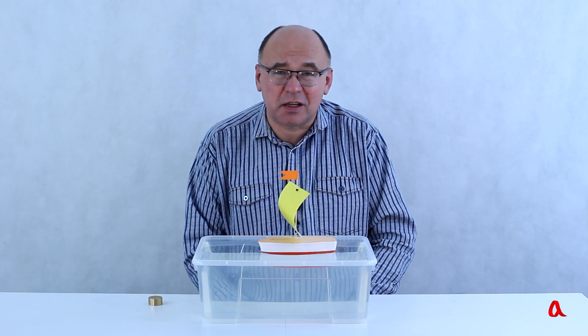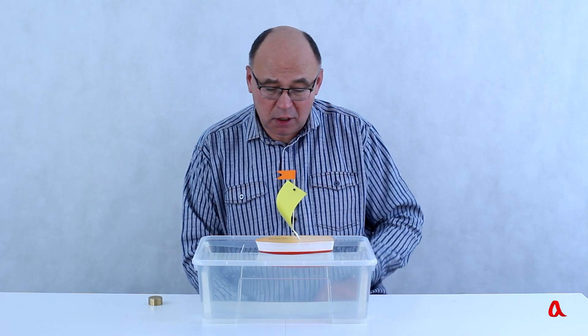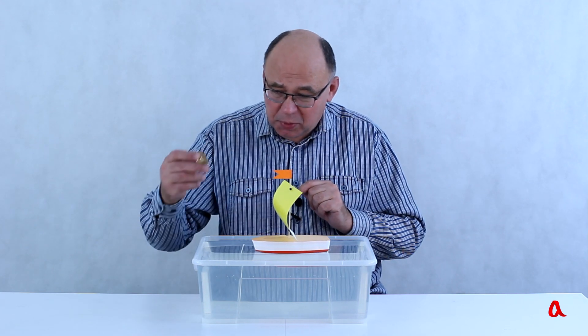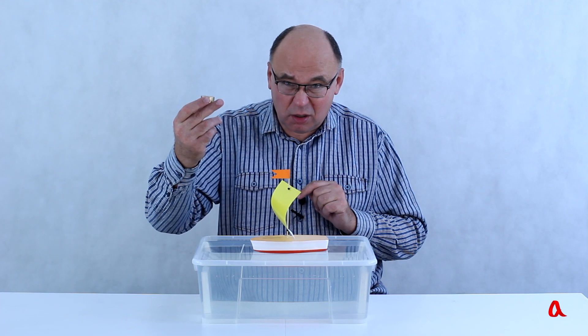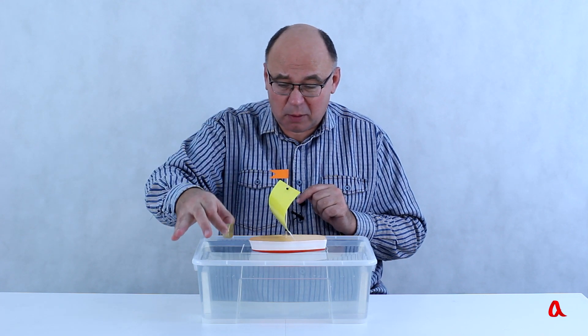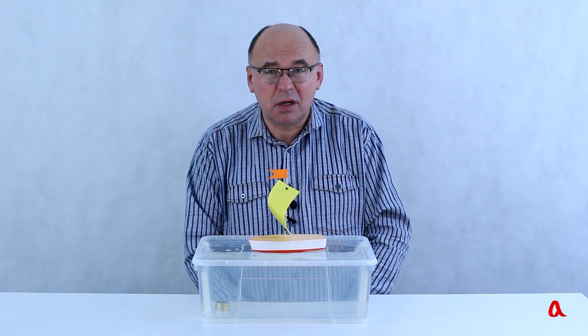It may seem that light bodies can float and heavy ones sink, but the boat weighs 200 grams and it floats, whereas this load weighs only 100 grams and still sinks. So what's it all about?